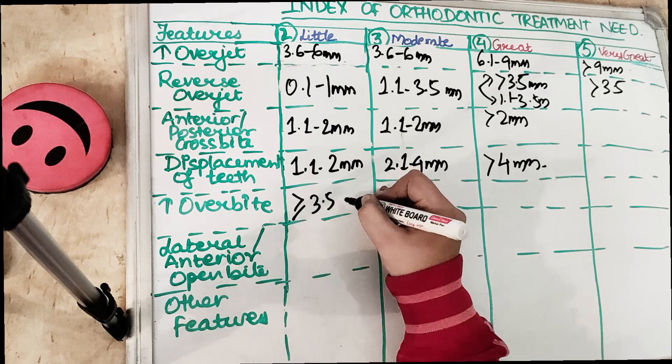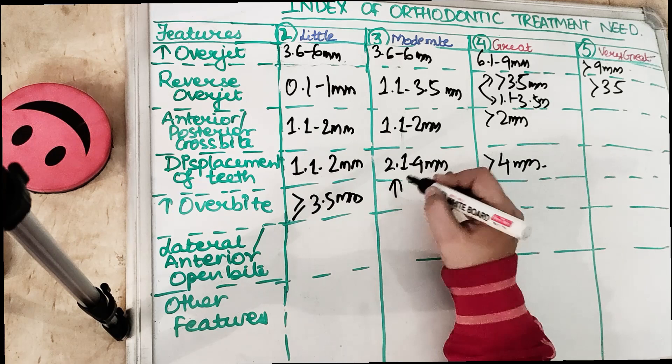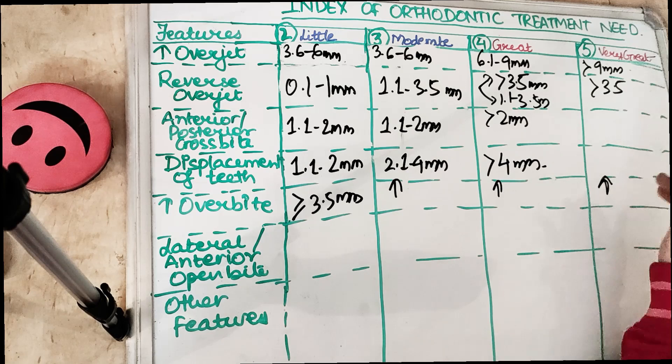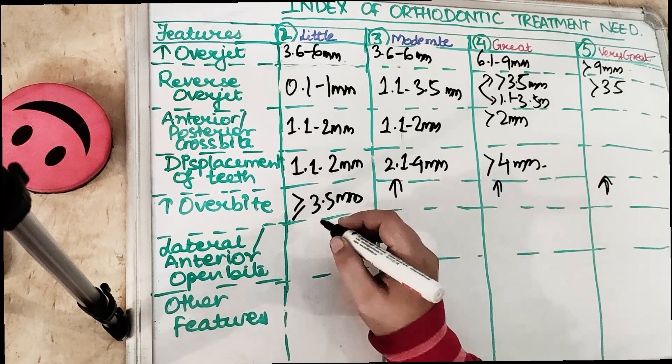For overbite: Grade 3 is increased overbite of more than or equal to 3.5 millimeters without gingival contact, or complete overbite without any gingival trauma. Grade 4 is increased or complete overbite with gingival or palatal trauma. Grade 5 is also increased or complete overbite with gingival or palatal trauma.